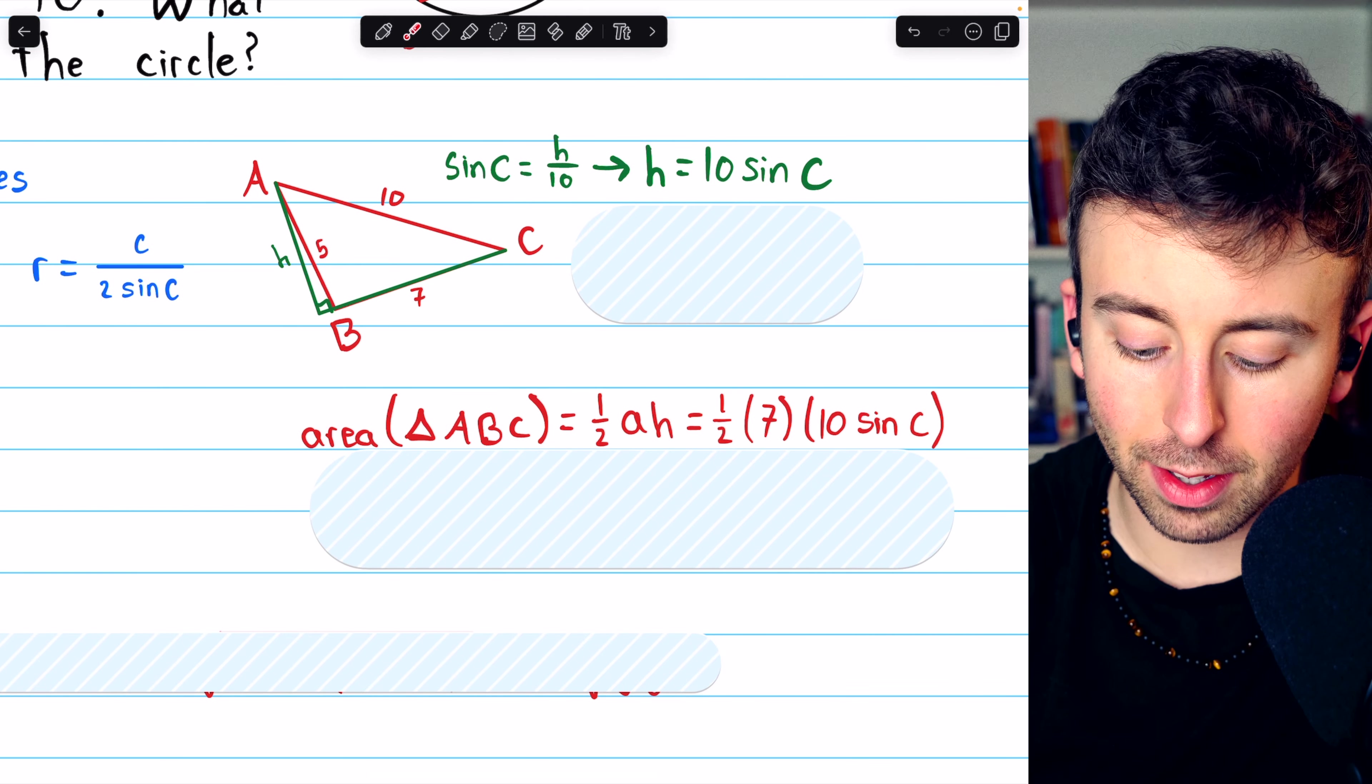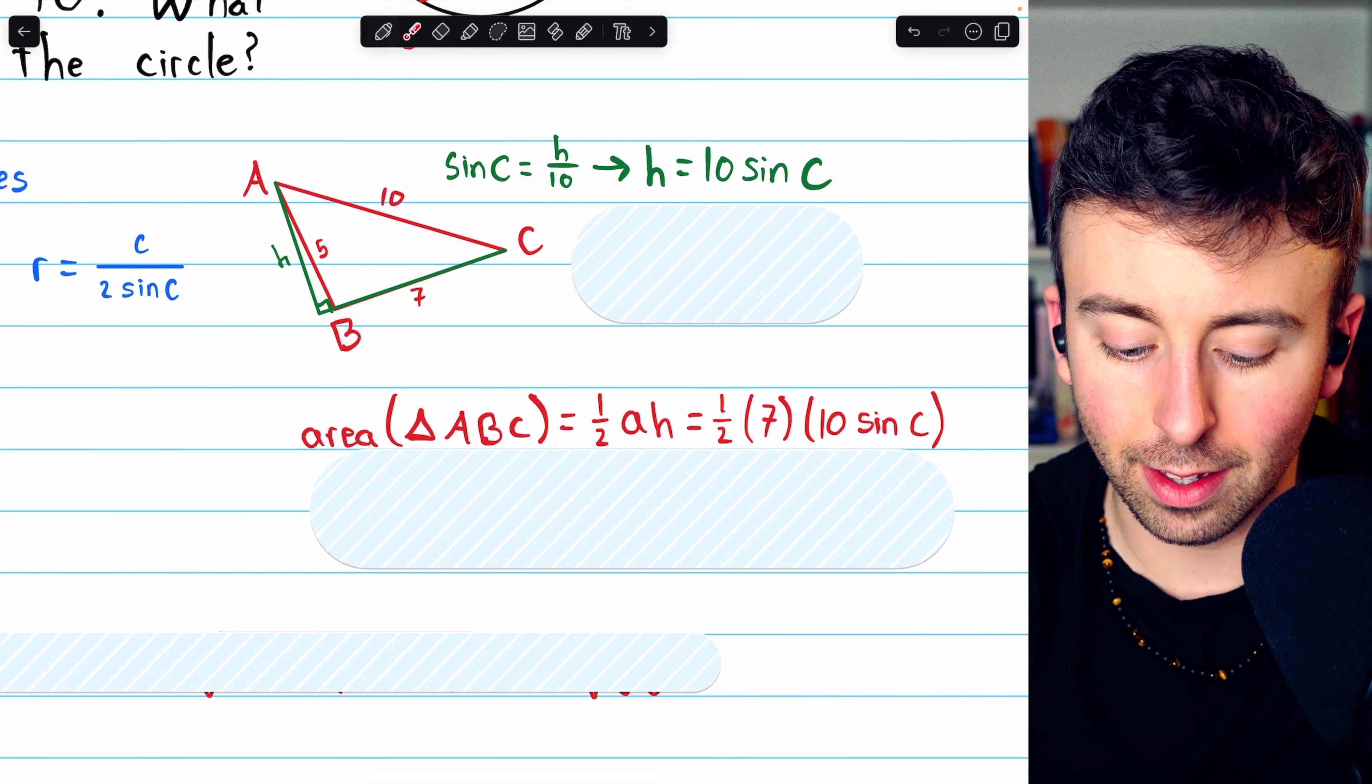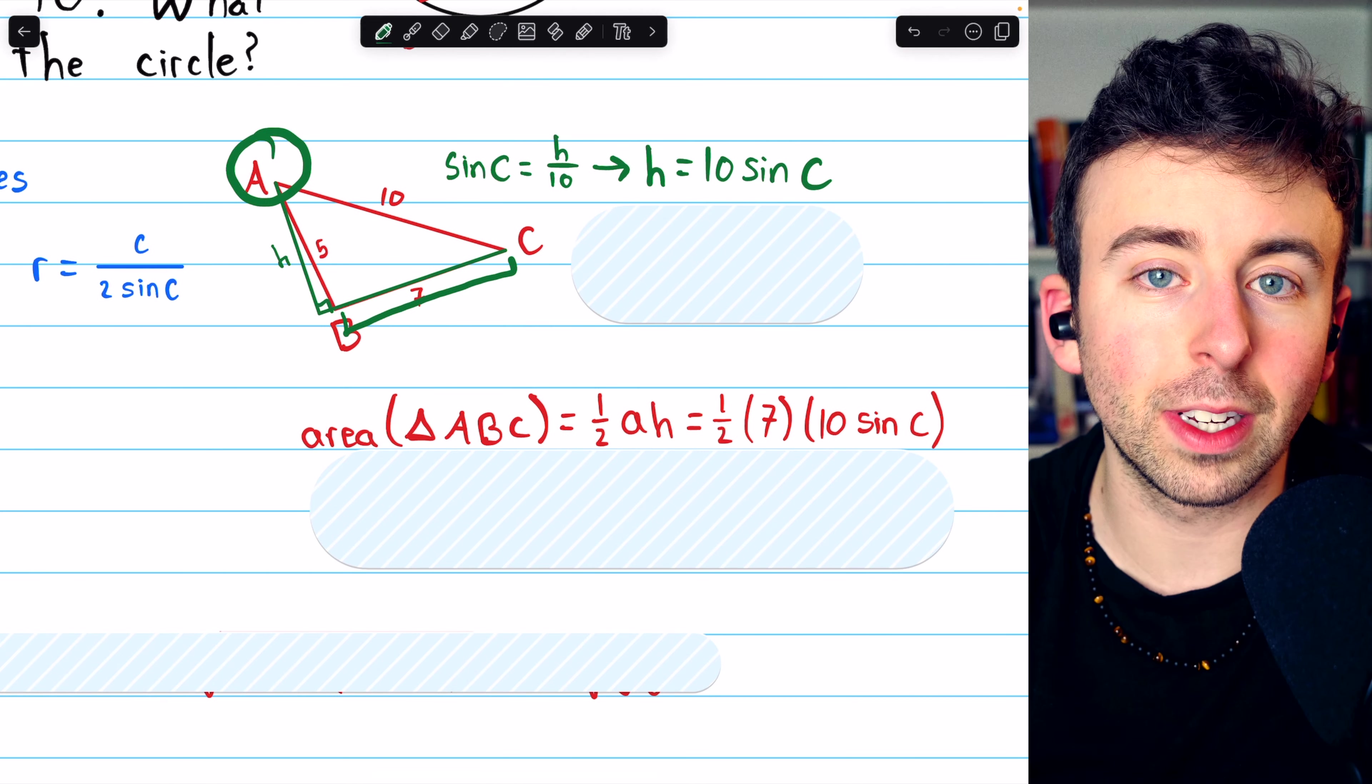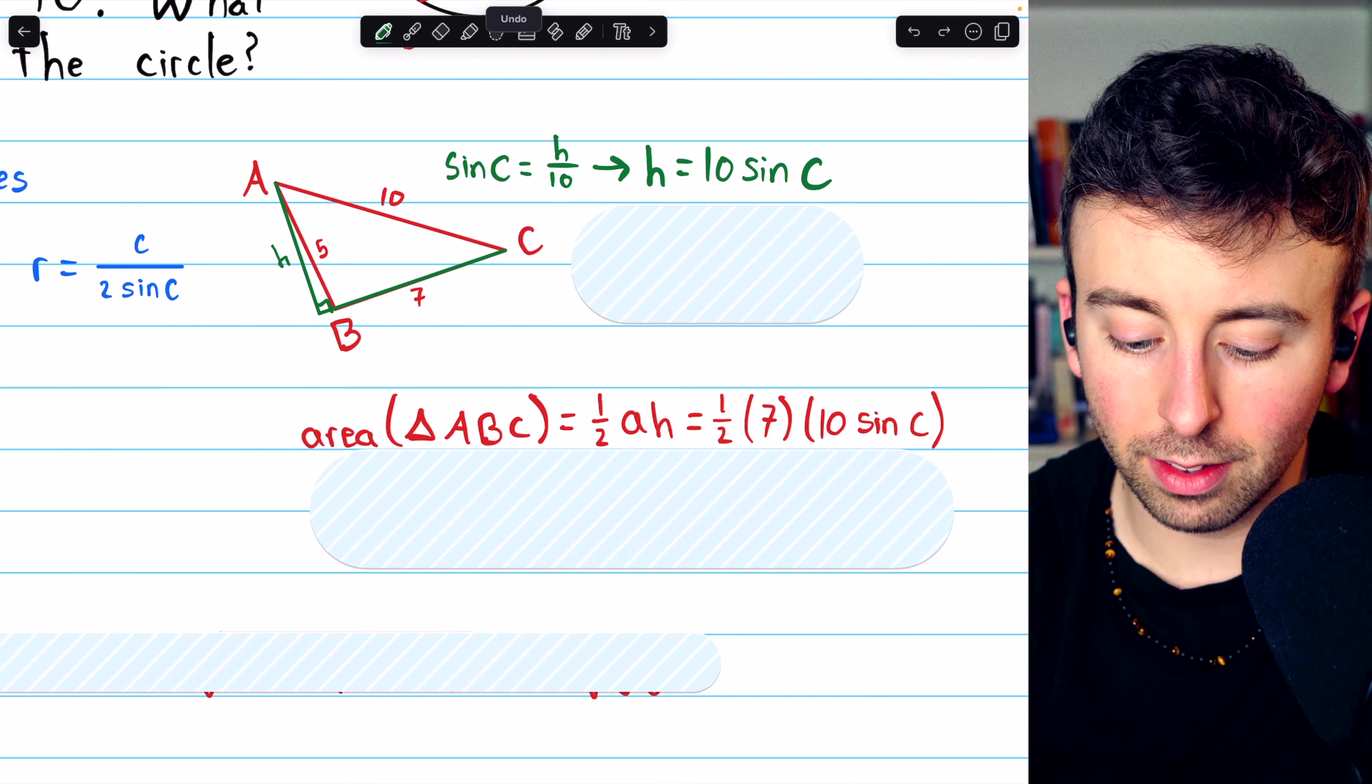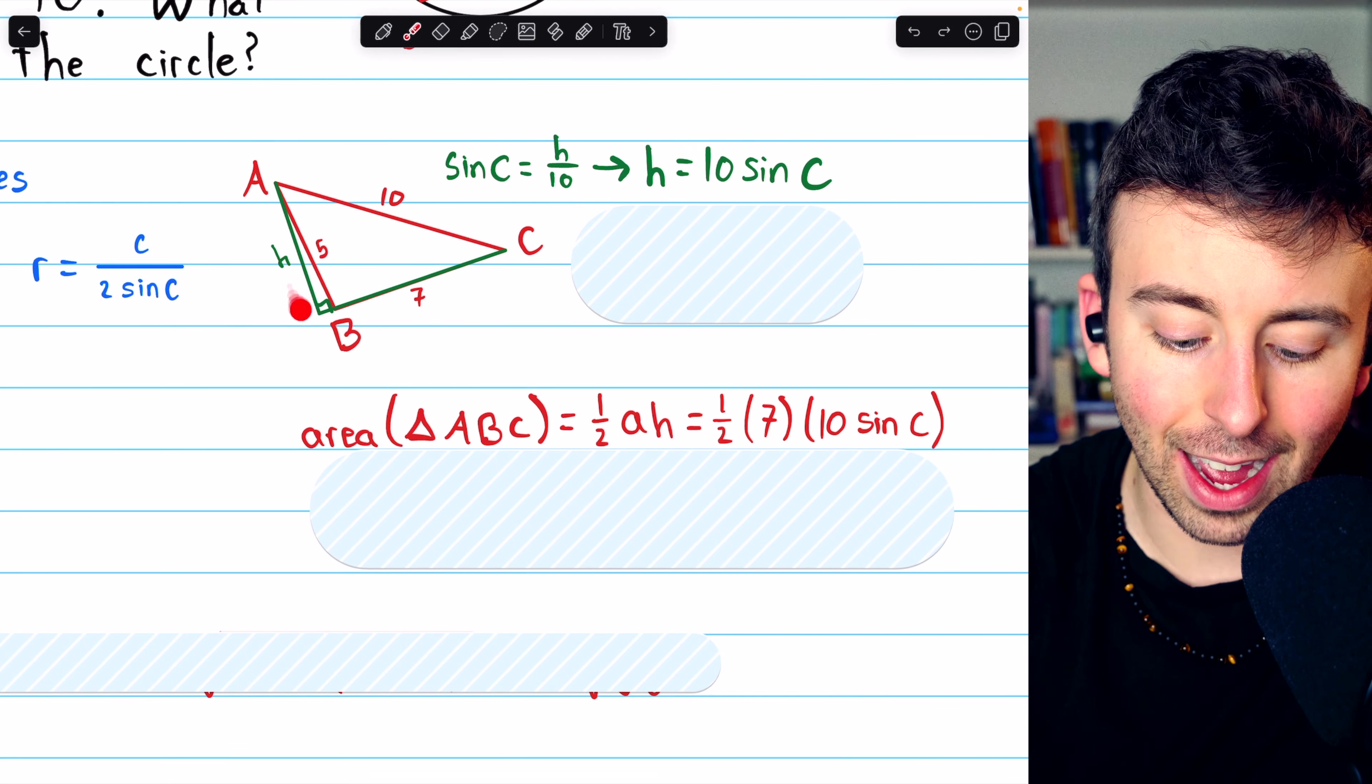The area of triangle ABC is 1 half base times height. The base is this side here, and since that's the side opposite vertex A, we're going to say that this side has length little a. So it's 1 half base times h, the height,